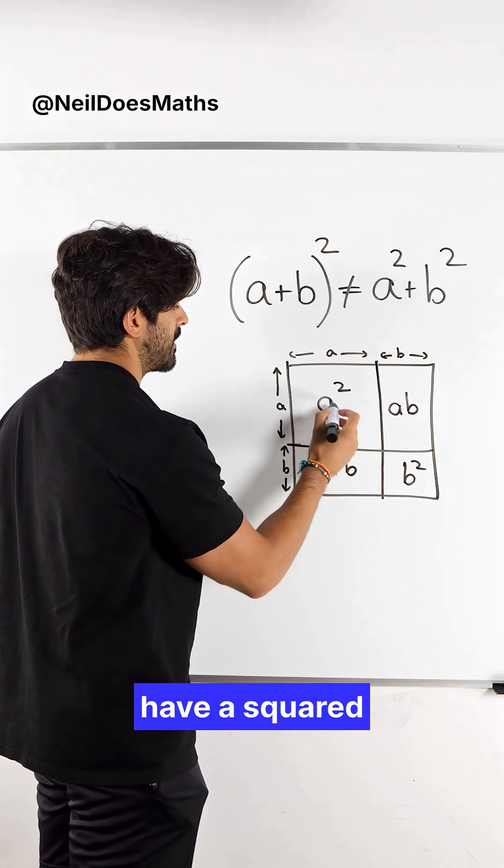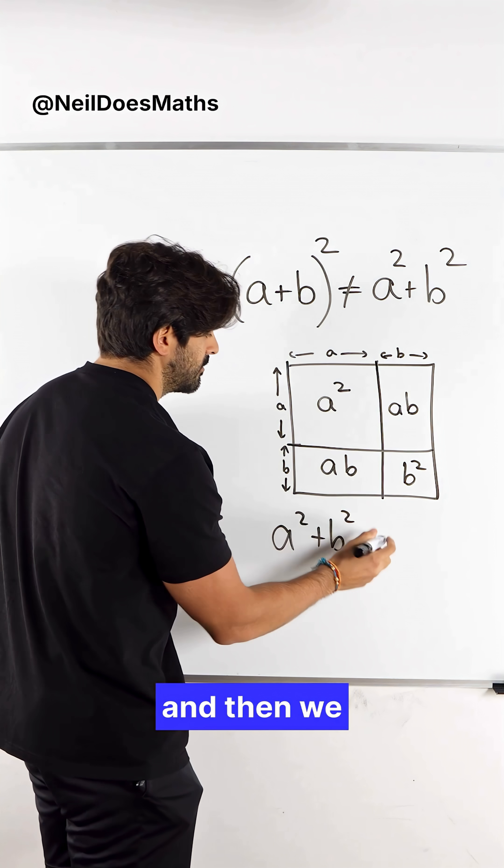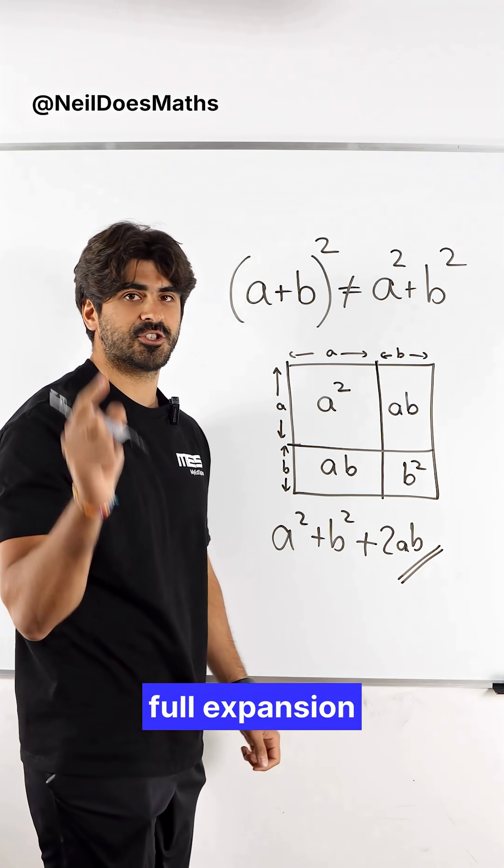So when we add this up, we have a squared plus b squared and then we have two ab's, and that is our full expansion.